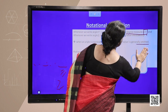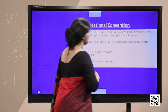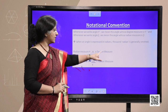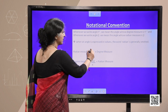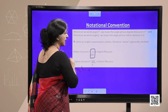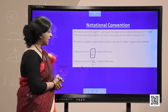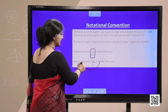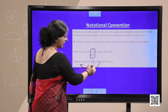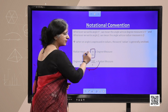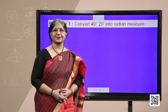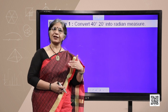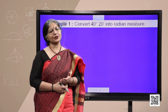To convert degree measure to radian measure, multiply by π/180. To convert radian measure to degree measure, multiply by 180/π. We will now do some examples to convert degrees to radians and radians to degrees.